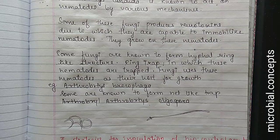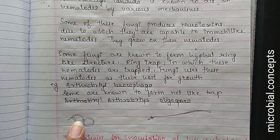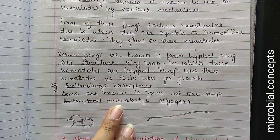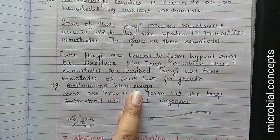Arthrobotrys brochopaga forms a net-like or mesh-like trap structure through which nematodes get trapped easily. To clarify: the ring-like structure is formed by Arthrobotrys brochopaga, and Arthrobotrys oligospora forms a net-like structure.